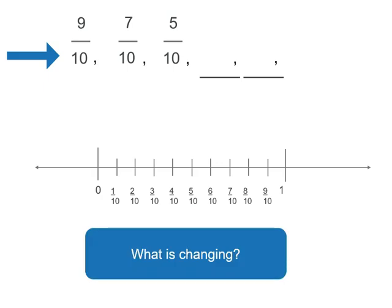Our first number is 9 tenths. So remember, the thing that's changing is the numerator, the number on the top of our fraction. We've got 9 tenths. So if we put a little ball where 9 tenths is, then look at our next number. It's 7 tenths.